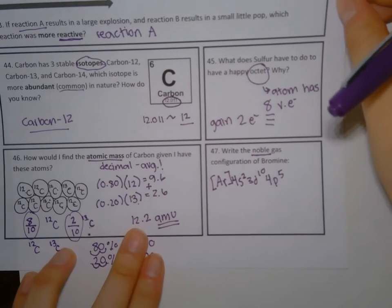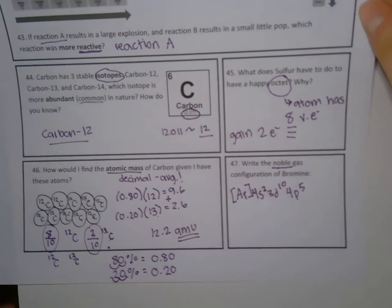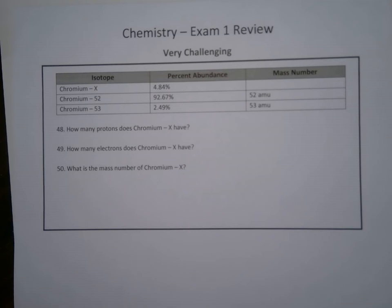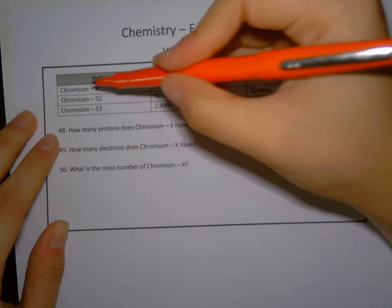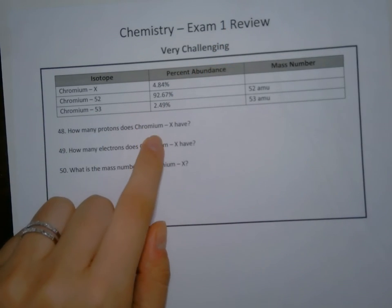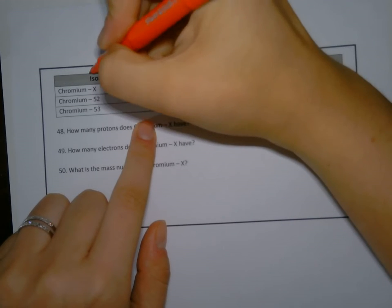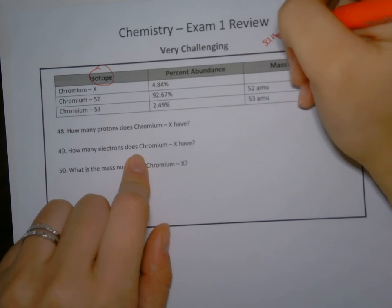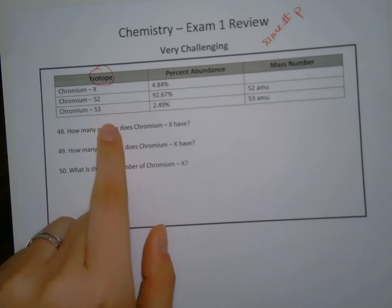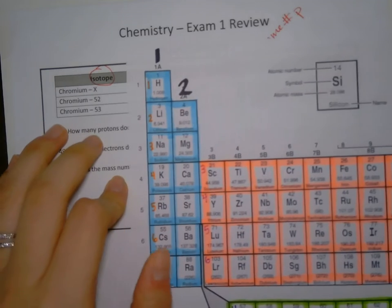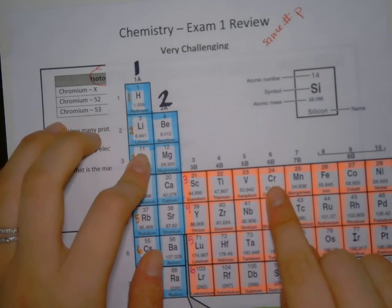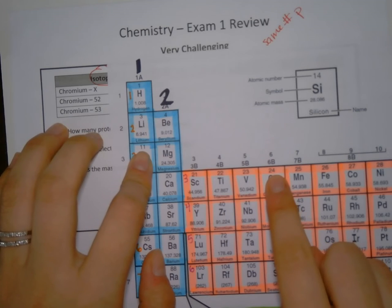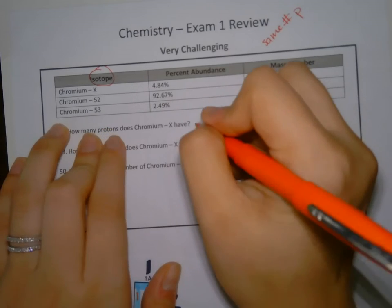Now we're moving on to the hardest part of this review — the most challenging — and I'm going to use the color red, because that's the color it was on the review. It's only three questions. Number 48: chromium X — how many protons does chromium have? These are isotope notations, and all isotopes have the same number of protons. I just find chromium on my periodic table — atomic number 24 — so chromium has 24 protons.